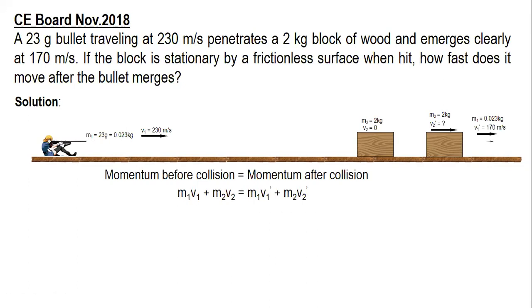So we substitute the values. Momentum before collision equals momentum after collision. m1v1 + m2v2 = m1v1' + m2v2'. 0.023(230) + 0 = 0.023(170) + 2v2'. Solving, v2' = 0.69 meters per second.